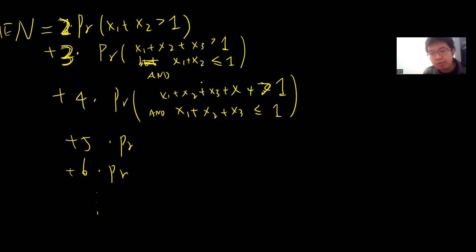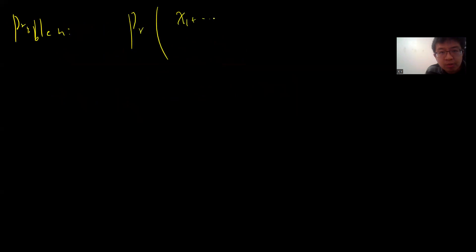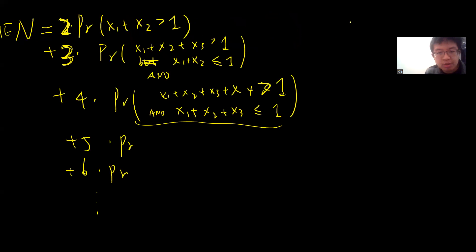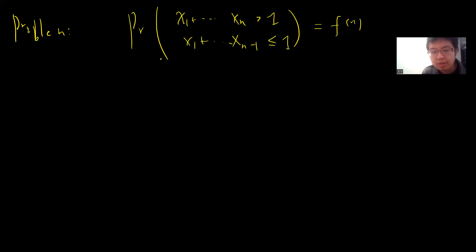The problem boils down to the following: how to compute the probability that X1+X2+...+Xn > 1 while X1+...+X(n-1) ≤ 1. If I can compute this as a function of n, I can evaluate the expectation series exactly.